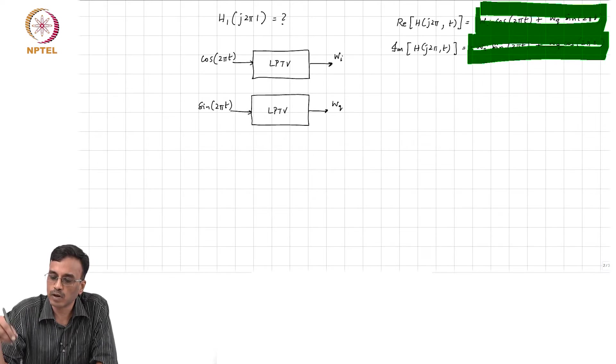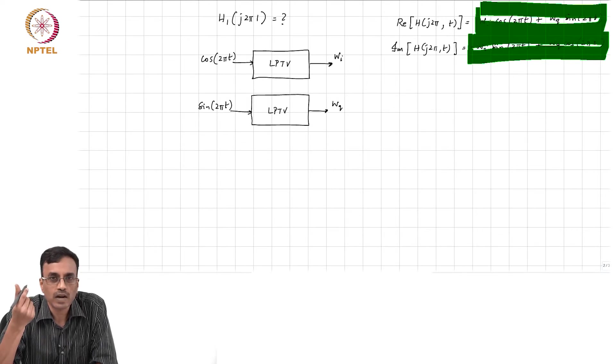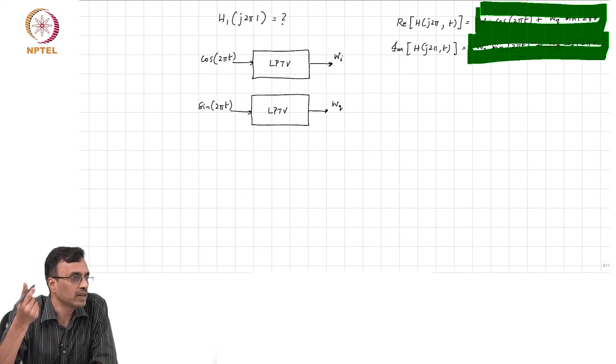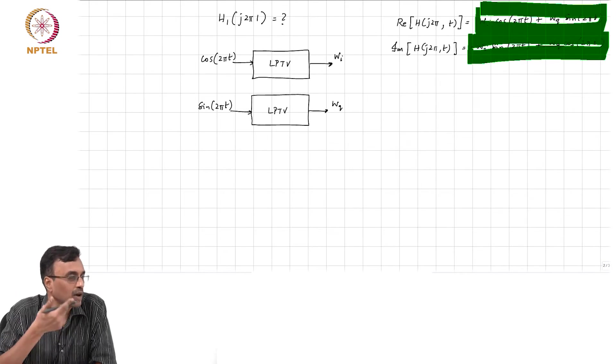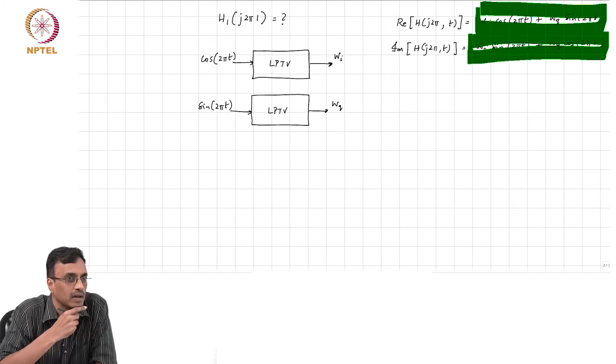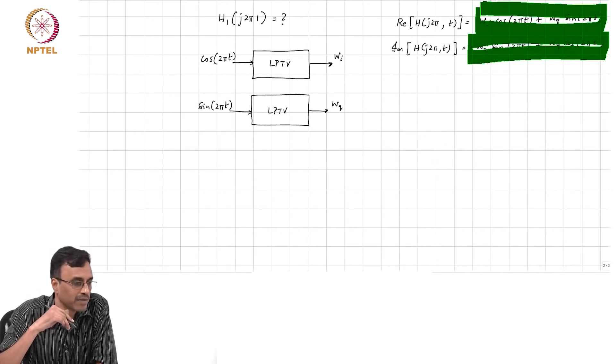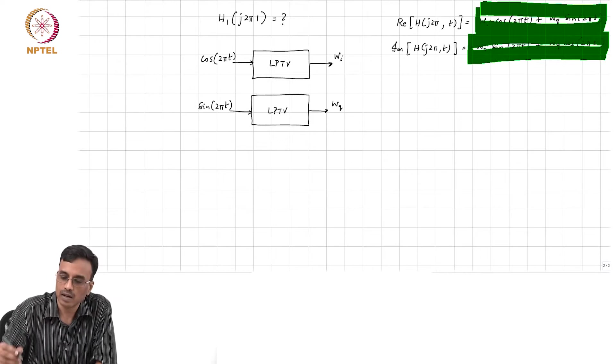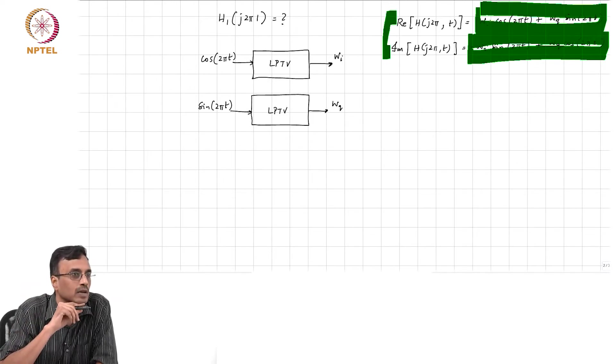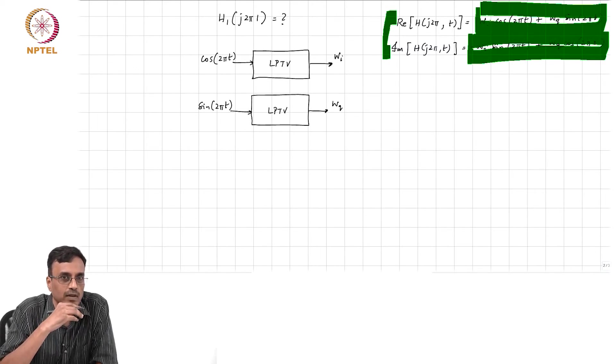So the waveforms that you see for real and imaginary parts of H will be periodic, and they will be periodic with what frequency? fₛ. And is that because the input is at fₛ or what? I mean, the input also happens to be at fₛ, correct. Even if the input was an arbitrary frequency, you will find that these two will be periodic with fₛ, and that is because the system is varying with the frequency fₛ, alright?